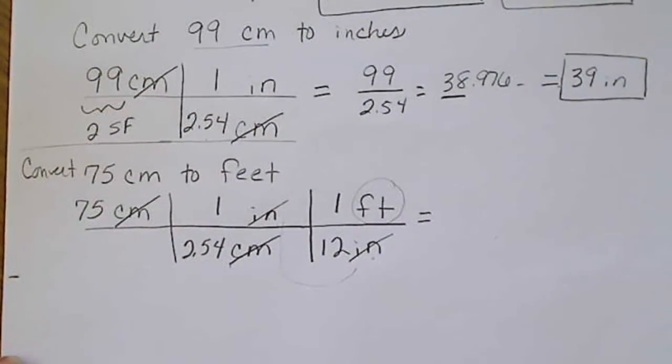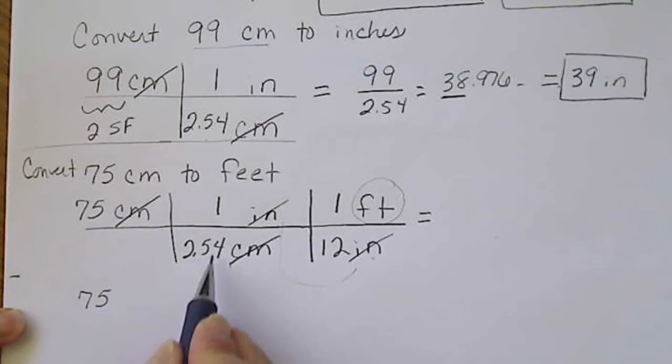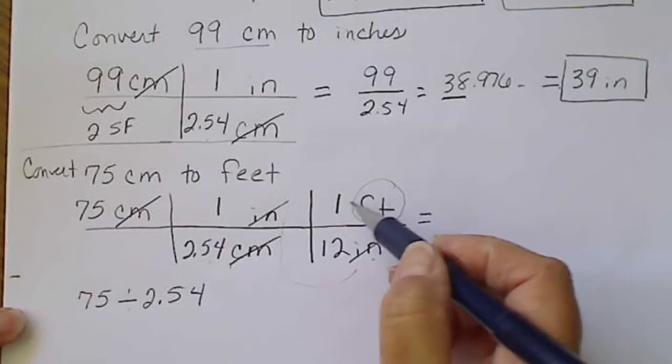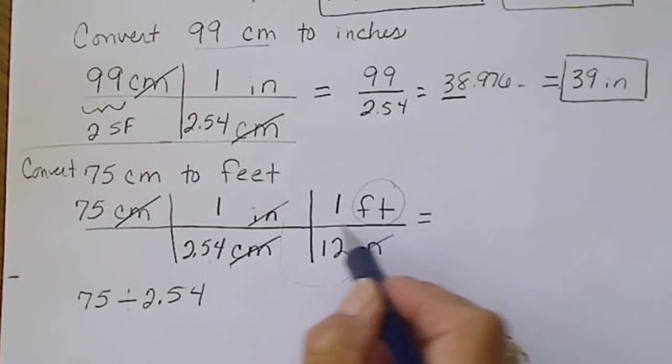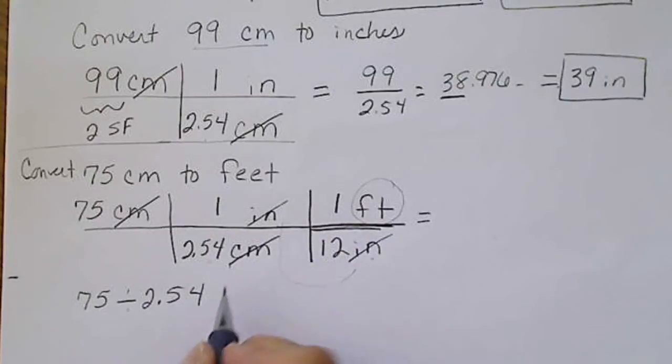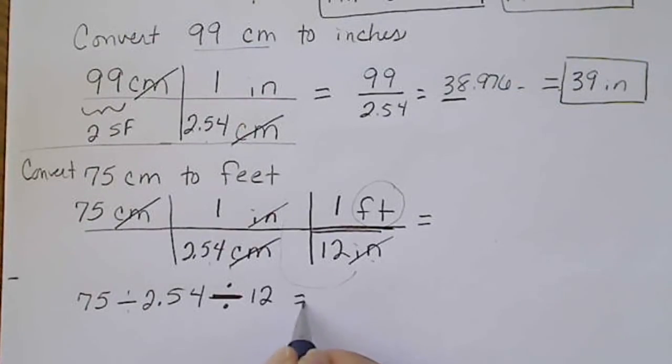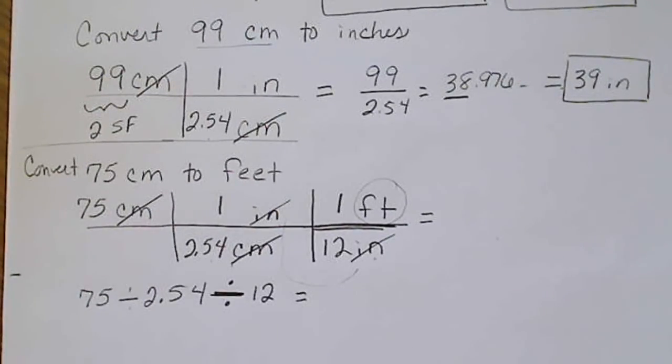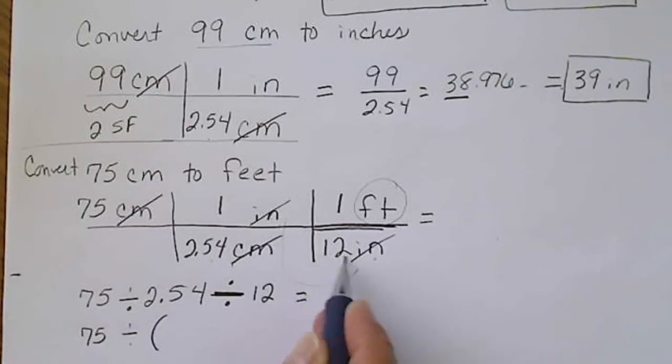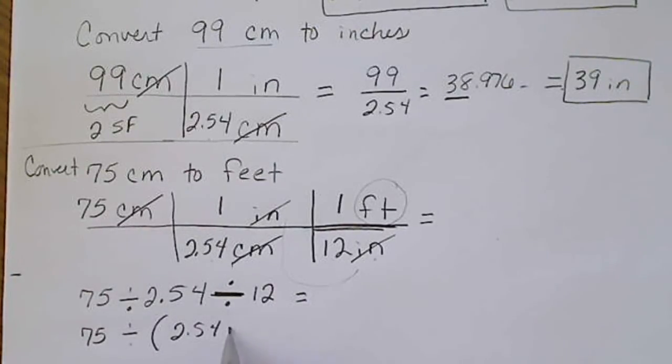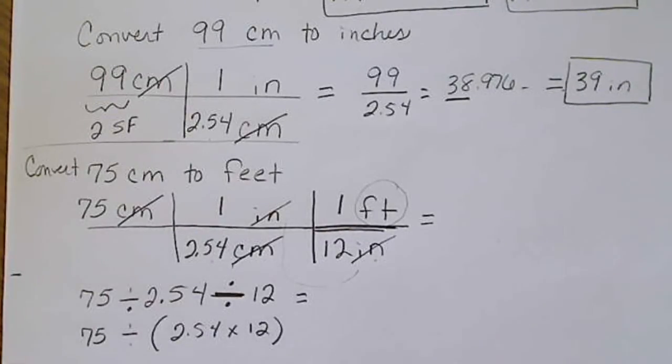Now the way we want to plug this into the calculator would be 75, and since this is in the denominator we're going to divide by 2.54, then we could multiply by 1 which is not necessary, and then divide by 12. Sometimes this doesn't look right because we're used to multiplying denominators together. If you feel more comfortable doing that, you could take 75 divided by and put this product in parentheses. You could prove this to yourself that both of these will give us the same value.